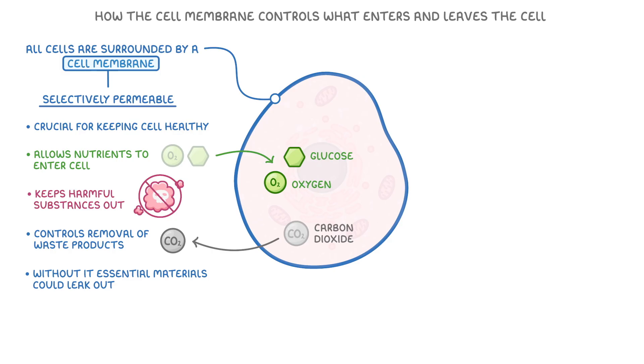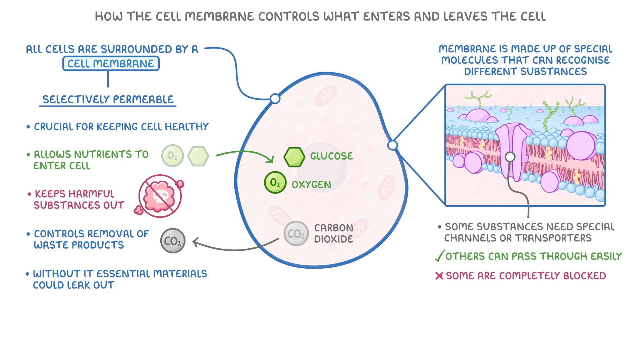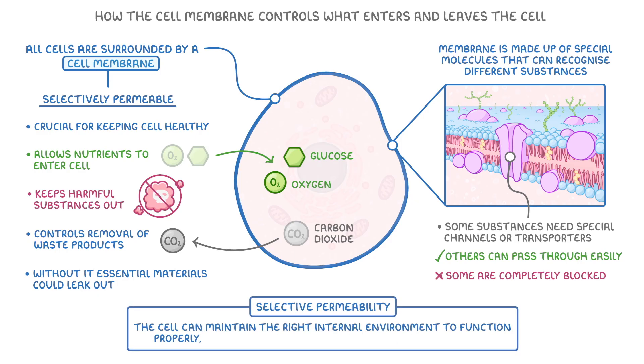Now, the membrane can do all of this because it's made up of special molecules that can recognize different substances. Substances need special channels or transporters in order to cross the membrane, whilst others can pass through easily, and some others are completely blocked from crossing. This selective permeability means the cell can maintain the right internal environment to function properly, even when the conditions outside of the cell change.